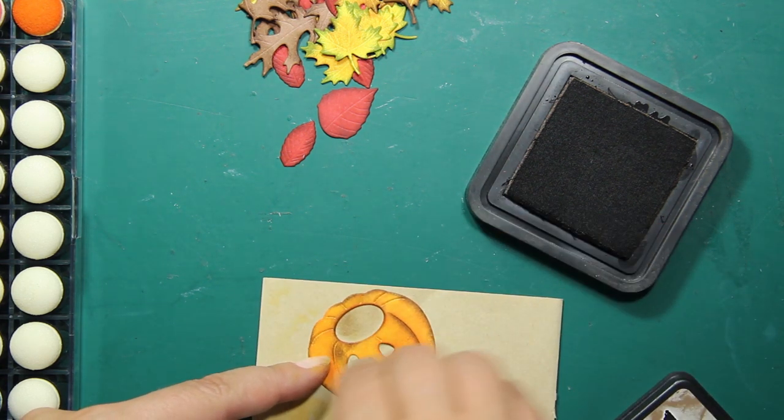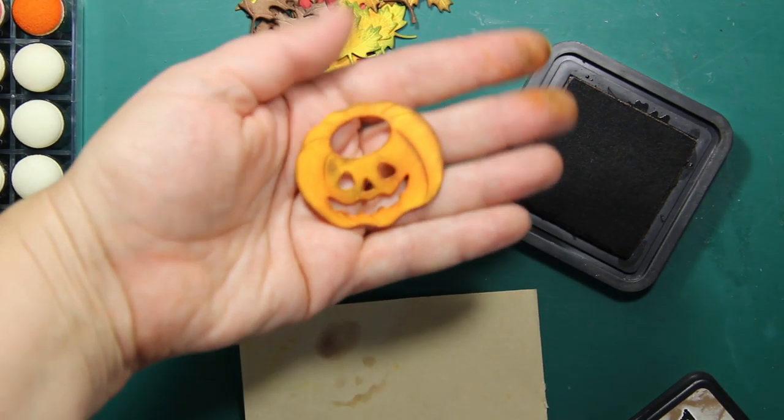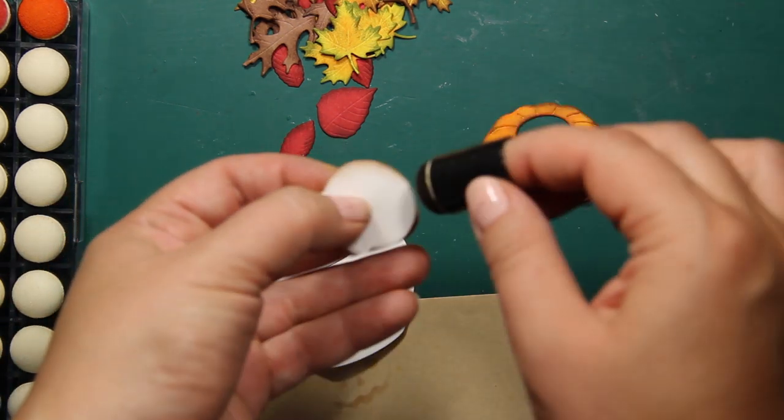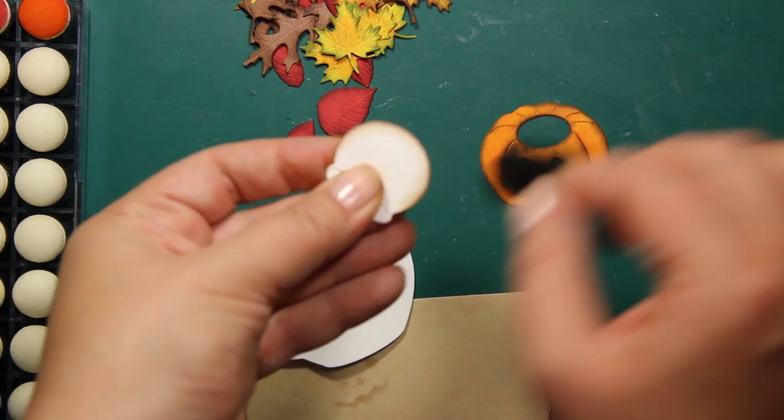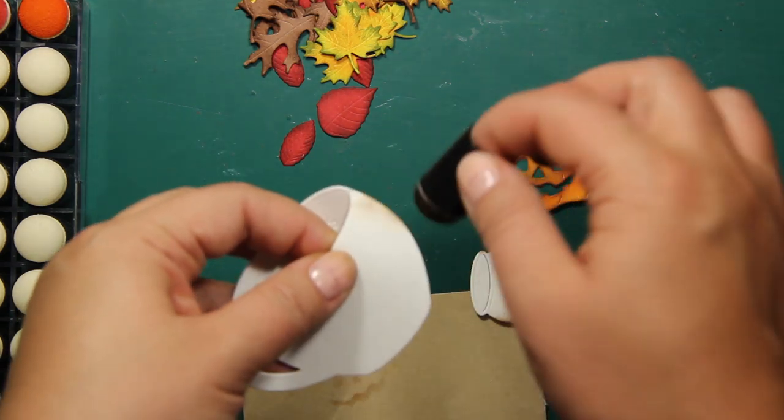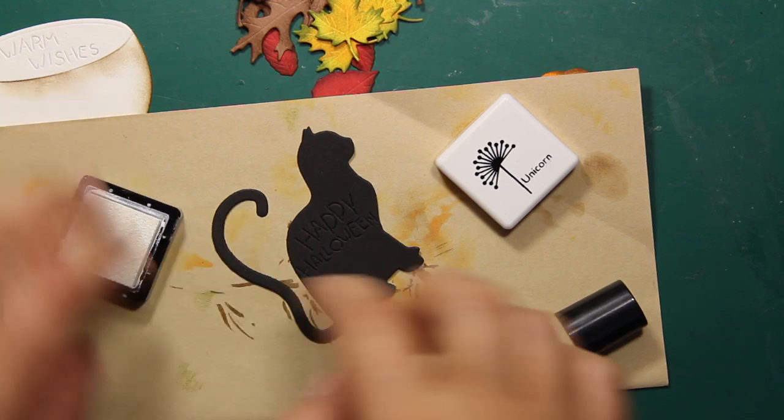I'm also going to apply some brown ink onto this little pot as well as the bigger cup just to match all other die cuts in the card. The last die cut I'm gonna ink up is that cat.